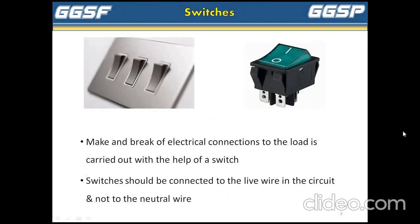First, switch. A device for making and breaking the connection in an electric circuit is called a switch. Switches should be connected to the live wire in the circuit and not to the neutral wire. There are various types of switches like single pole single throw, single pole double throw, double pole single throw, double pole double throw, push button, float switch, and toggle switch. They are used as per their applications and requirements.